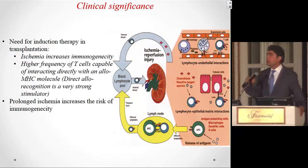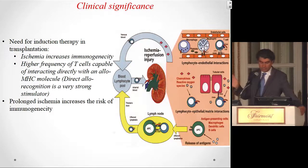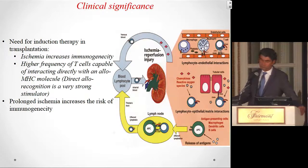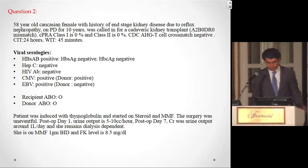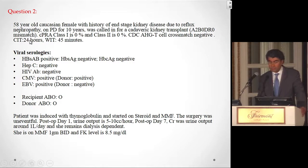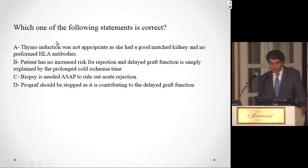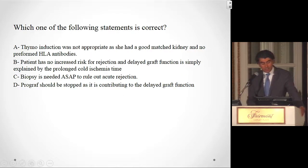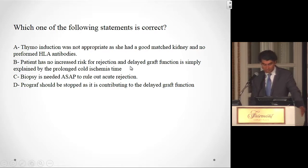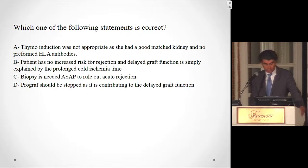The donor dendritic cells are eliminated quickly by the immune system, and ischemia makes the kidney more immunogenic early post-transplant, which resolves with time — explaining why induction therapy and high-dose maintenance are used early and then tapered. Back to the second question: this patient had a deceased kidney with prolonged cold and warm ischemia time, making Thymoglobulin induction appropriate. There is indeed increased risk of rejection. Biopsy is needed as soon as possible to rule out acute rejection — that is the correct answer. Tacrolimus should not be stopped; a therapeutic level is needed.